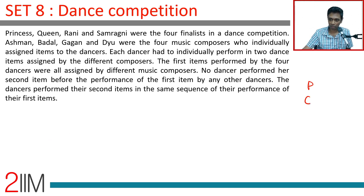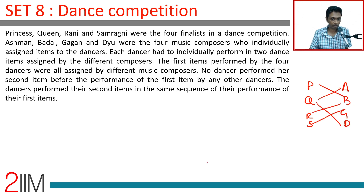So we have dancers P, Q, R, S and composers A, B, G, D. Each dancer had to individually perform in two dance items — just a different way to describe this — assigned by the different composers.